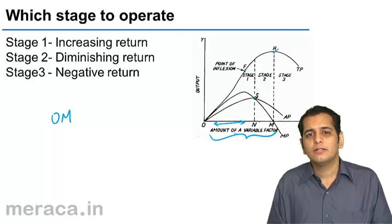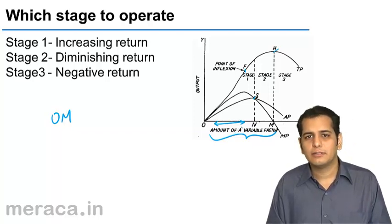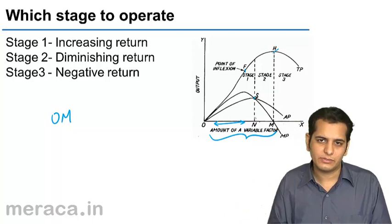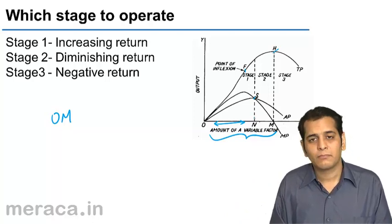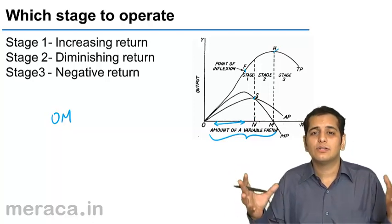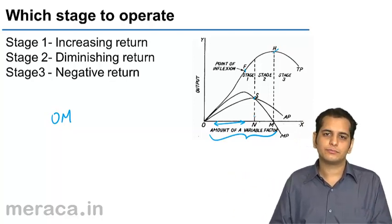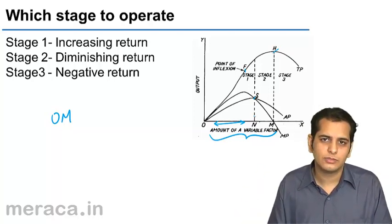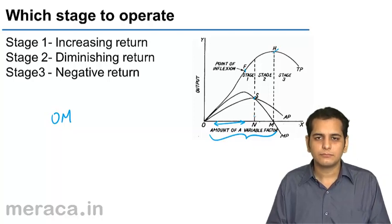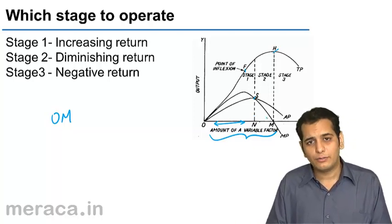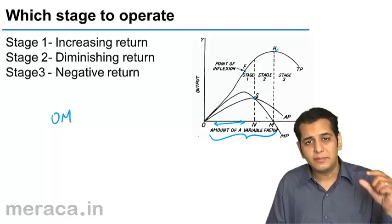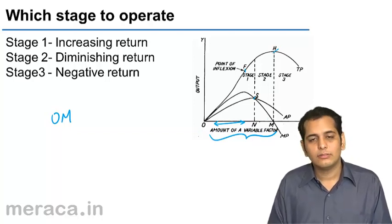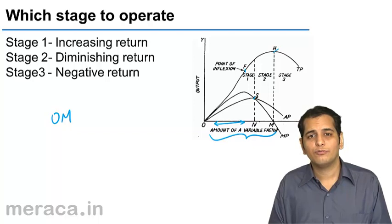Yes, he possibly might want to be at this level. But if he produces OM number of units — that is, if he moves into the second stage — we can see that in total he has more number of units. So what he can do is more business; his sales can increase. If he stops at ON number of units, his sales will be lesser in comparison to if he produces OM number of units.